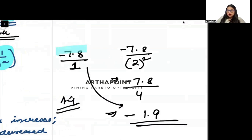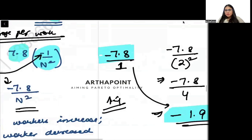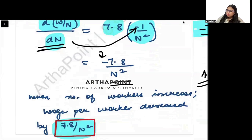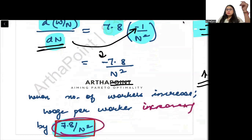But you see that this is an increase in wage because this is a negative number. Minus 7.8 and minus 1.9, this is greater. So as the number of workers is increasing, the wage per worker is increasing by these many units because N is in the denominator.